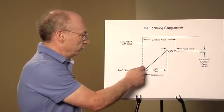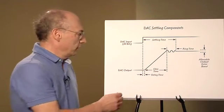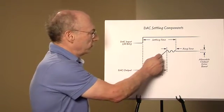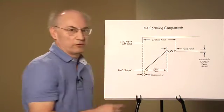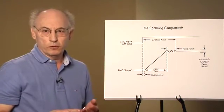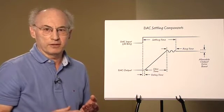There's delay time which is simply propagation delay. The D to A doesn't do anything. Then it wakes up and slews at its maximum rate of speed. And then finally it rings a little bit before it settles to its final value. Those three components make up the total length of the settling time of the D to A converter.